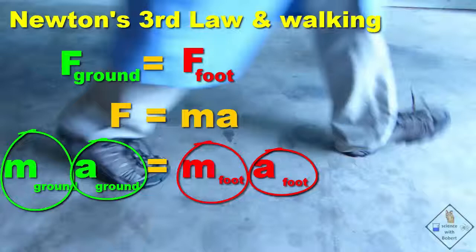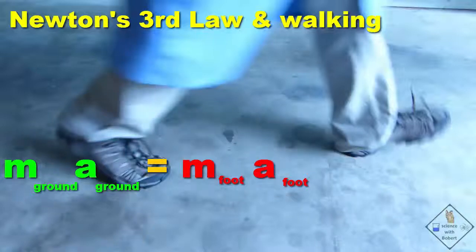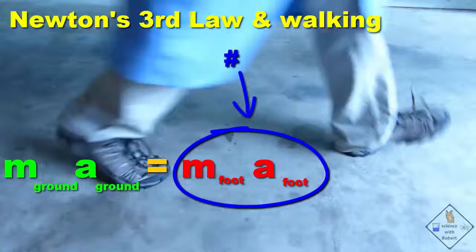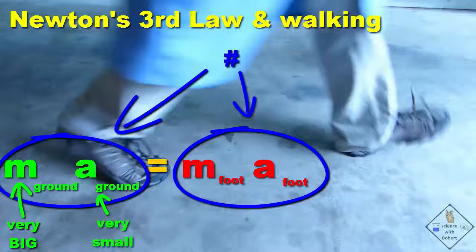I don't see the earth moving backwards when I walk across it! Let's take a closer look. We can measure the mass of the foot and the acceleration of the foot and multiply these measurements together to get some number. We have to get the exact same number when we multiply the mass of the ground times the acceleration of the ground. Since the mass of the ground is extremely large, the acceleration of the ground has to be extremely small — so small we can't even measure it, much less see it!